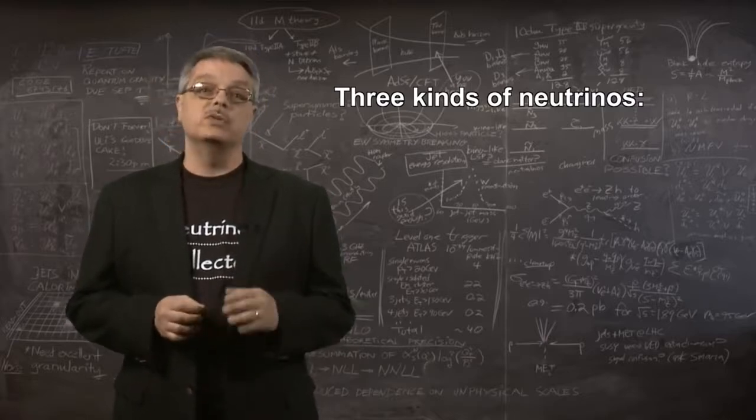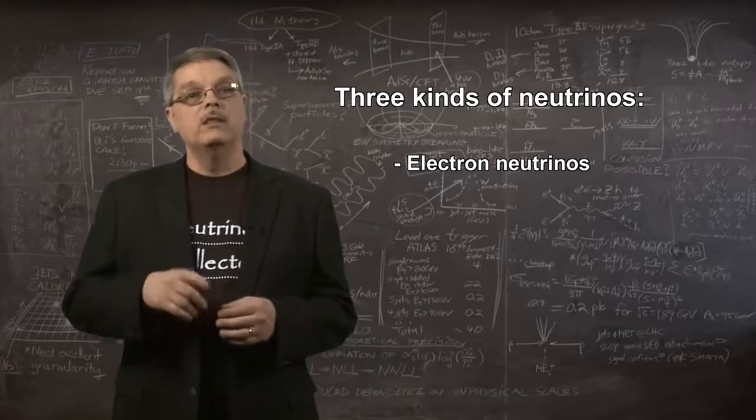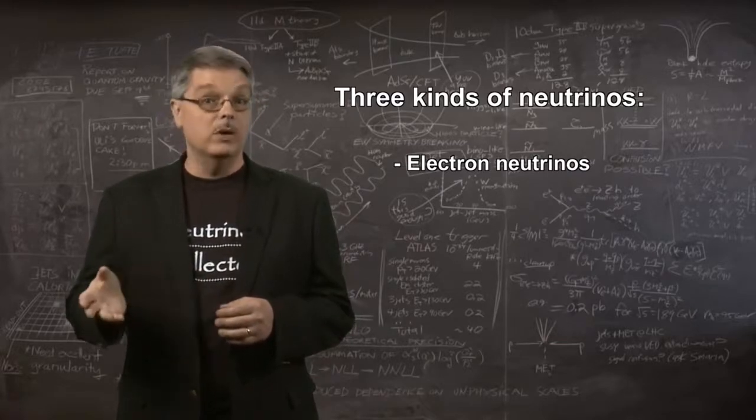One class of neutrinos is associated with electrons and is called the electron-type neutrino. The other two kinds of neutrinos are associated with cousins of the electron, the muon and the tau.